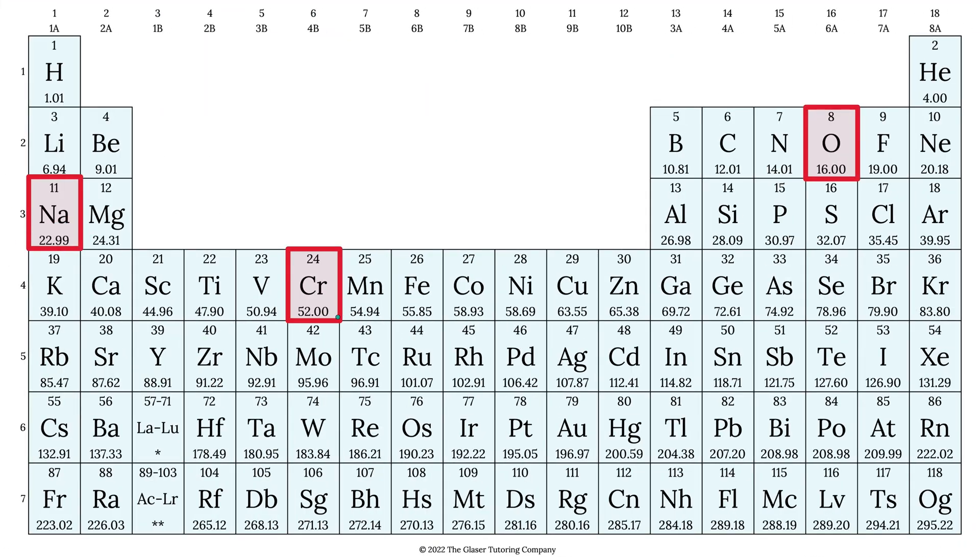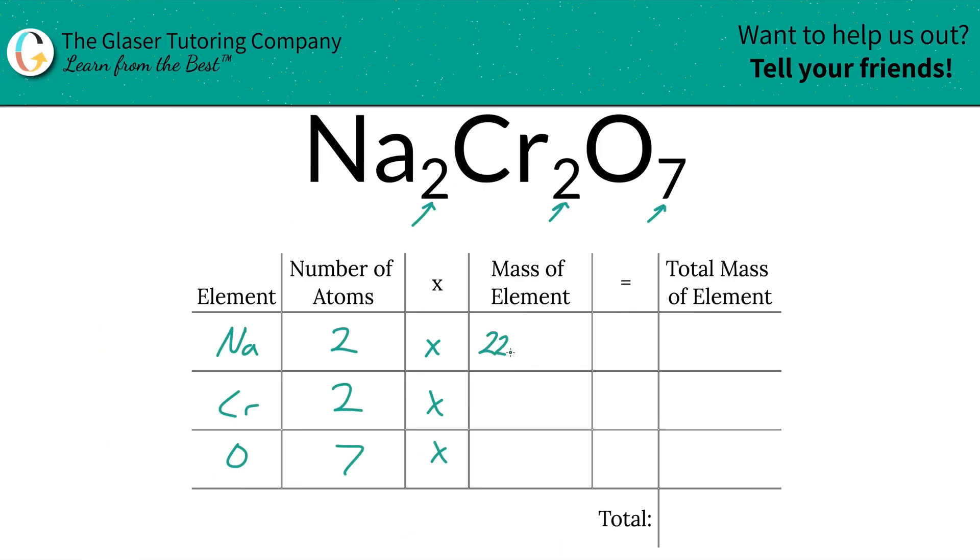Sodium's mass is 22.99, chromium is 52, and oxygen is 16. So that's what we're going to write down. So 22.99, we got 52 for chromium, and then oxygen was 16.